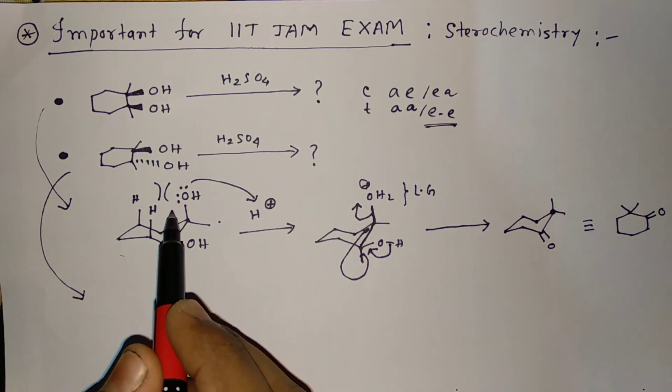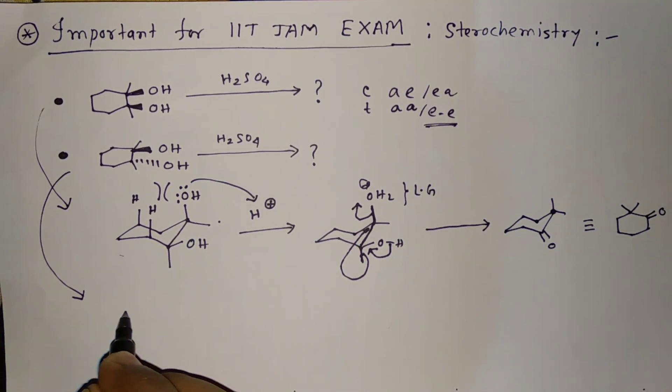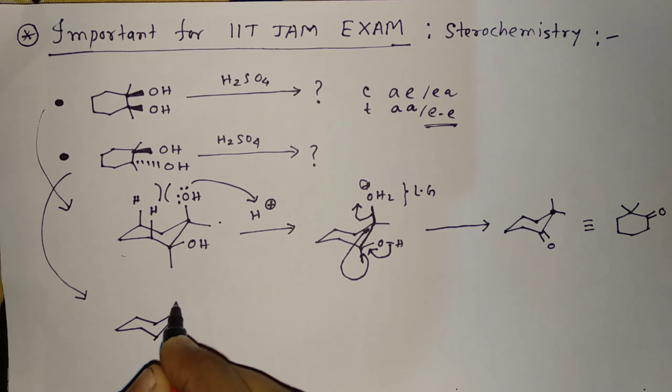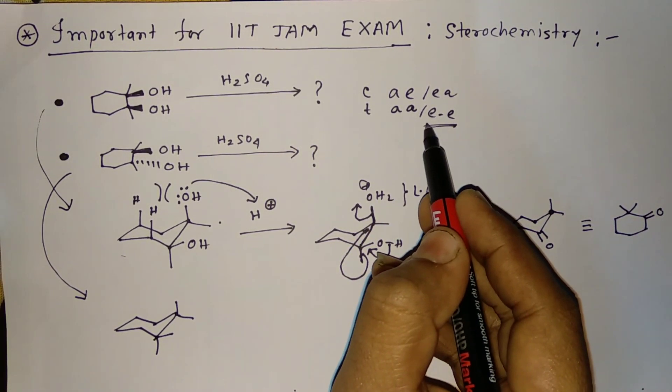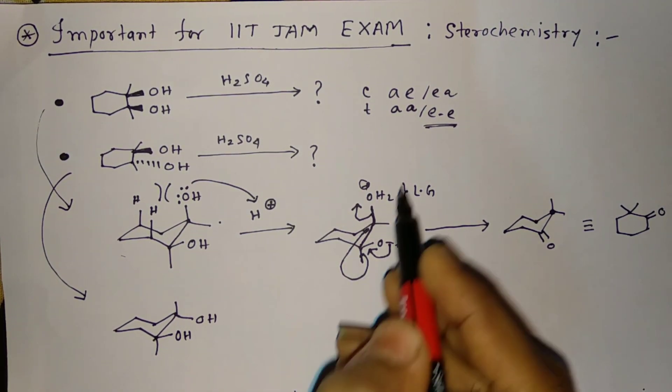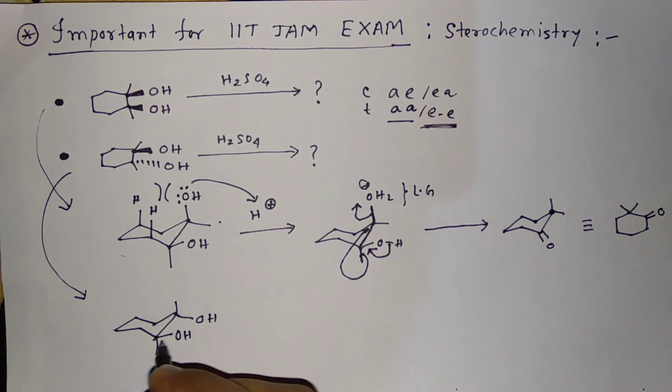So just drawing this system. That is 1,2-trans, trans-1,2 means equatorial-equatorial or axial-axial. OH, OH. This is more stable, that's why I am drawing only equatorial-equatorial. I am not drawing axial-axial. Then any hydrogen, any two OH similar or identical.